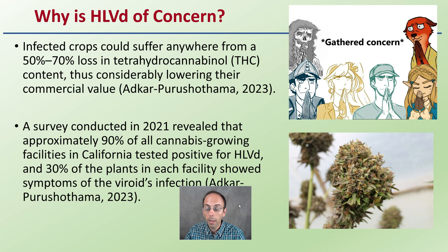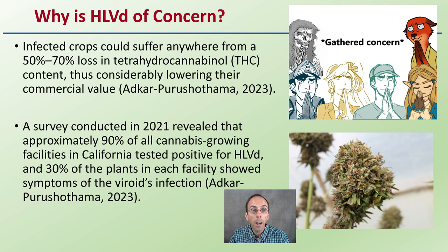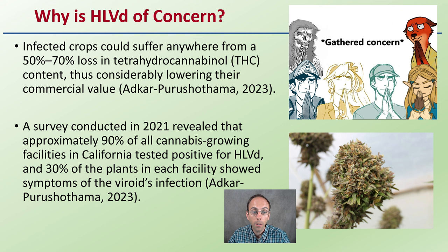So why is this a concern? Infected crops could suffer anywhere from a 50% to 70% loss in THC content, thus considerably lowering their commercial value. It could also affect CBD and other cannabinoids. A survey revealed that approximately 90% of cannabis growing facilities in California tested positive, and 30% of the plants in each facility showed symptoms of this viroid's infection. It's a very widespread issue that may initially be going unnoticed.